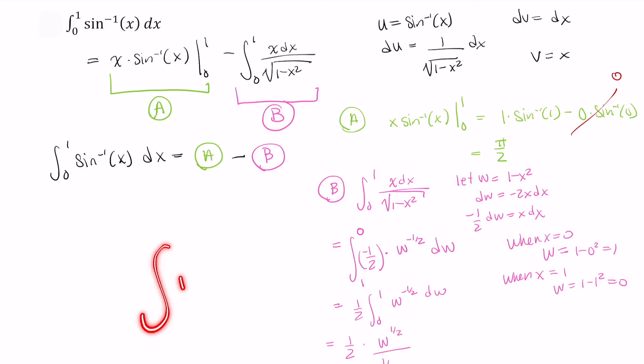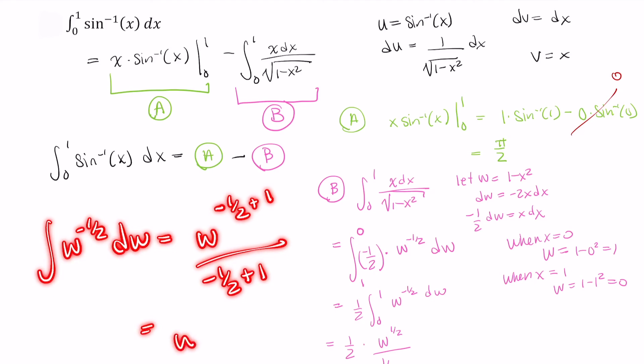Why is that? Well, the integral of w to the negative 1 half plus 1 divided by negative 1 half plus 1. So that's w to the 1 half power divided by 1 half.